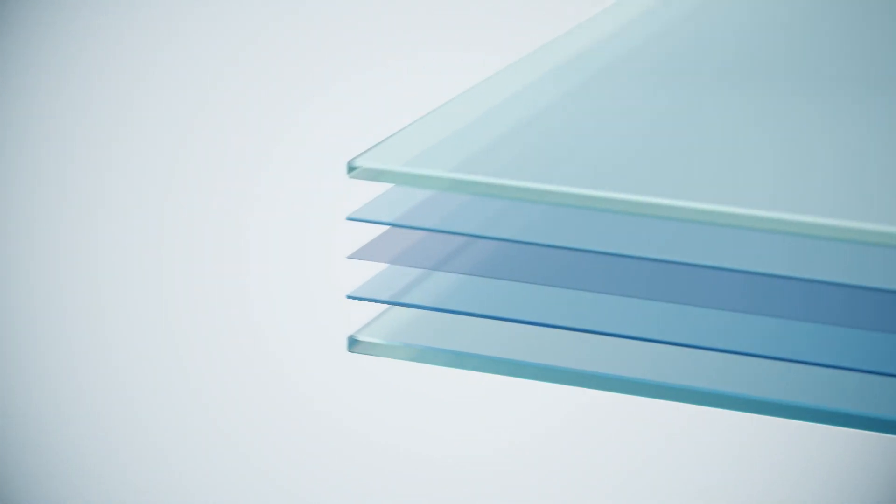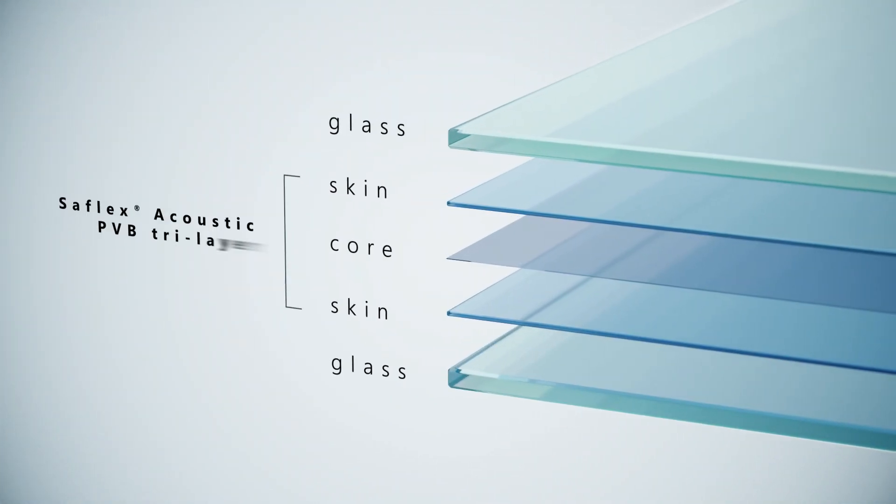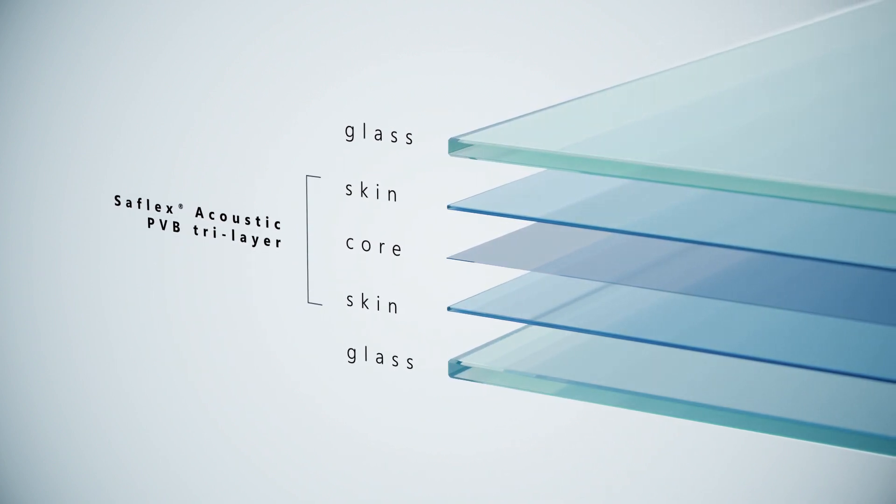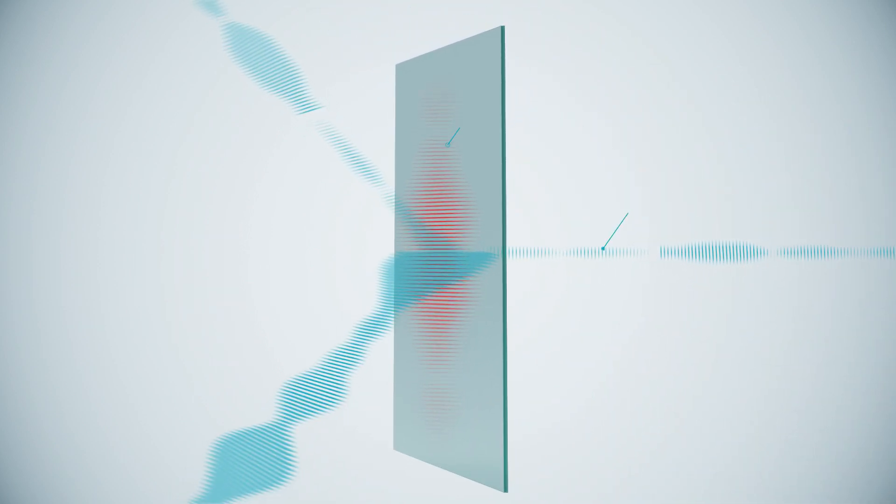Acoustic laminated glass is made of two pieces of glass held together by an acoustic polyvinyl butyrol inner layer. This advanced inner layer is comprised of three distinct layers that provide acoustic damping properties to the glass panel.